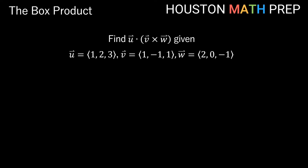Let's take an example and use our shortcut. If we want to find the box product u dot v cross w, given that u is (1, 2, 3), v is (1, -1, 1), and w is (2, 0, -1) — remember, you could first do v cross w and figure all that out, then take your answer and do u dot whatever you got. But we're just going to do this all in one shot.